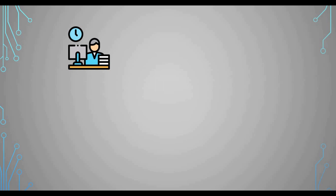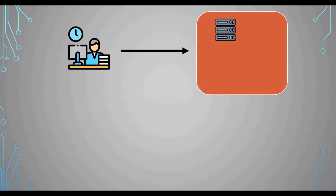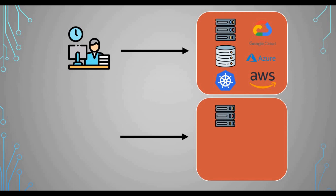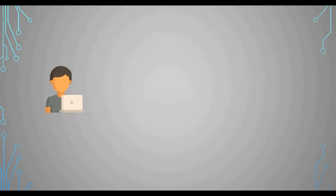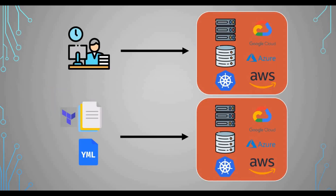As a DevOps engineer, you might want to create a server, a database, or a Kubernetes cluster on Google Cloud, Azure, or AWS. Normally, you log into the portal and manually click to create those instances. But with Infrastructure as Code, you use a Terraform file to write your configurations, or a YAML file for Kubernetes manifests, or Ansible files — that's the normal way you do it with IaC.